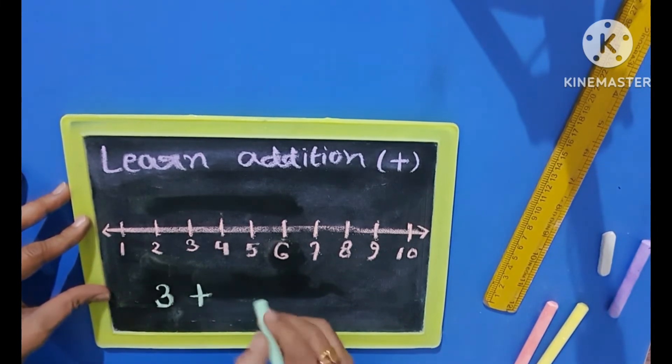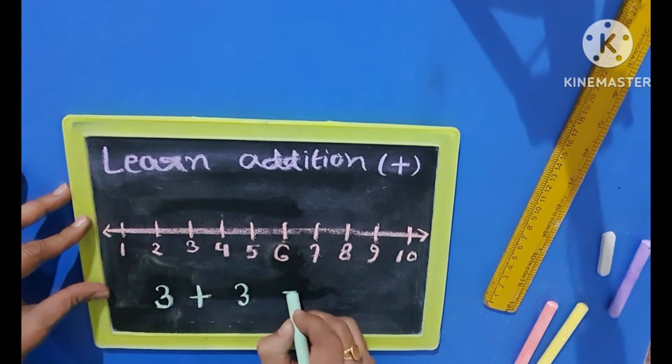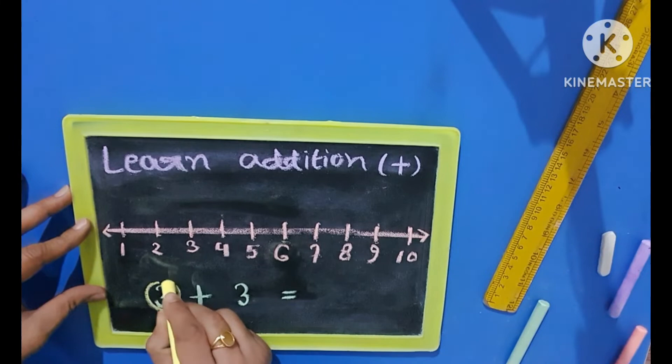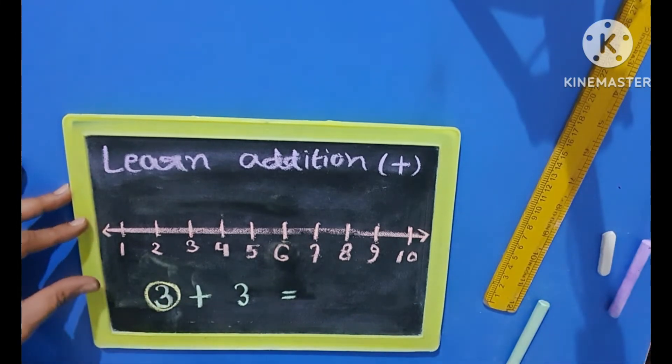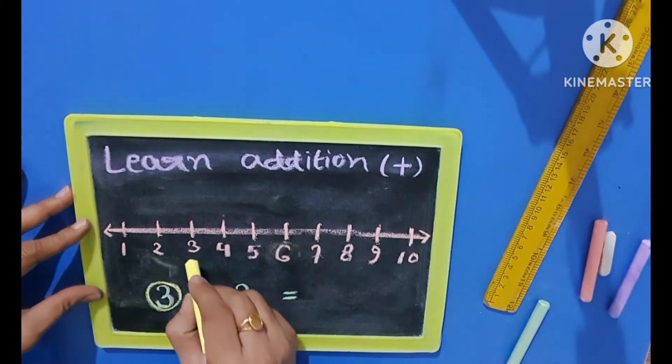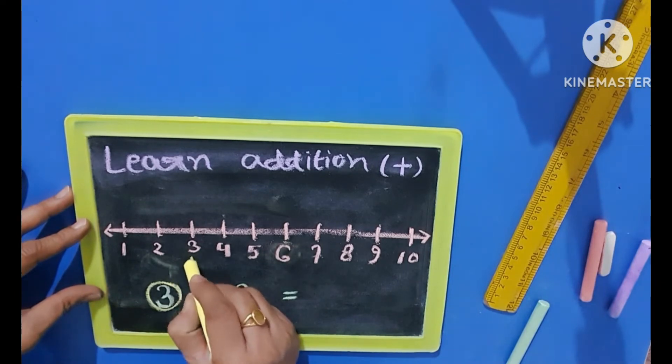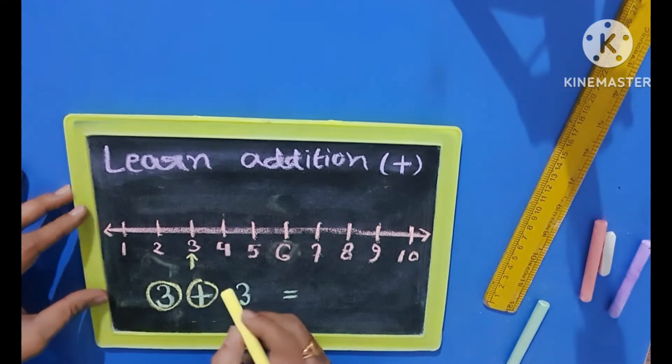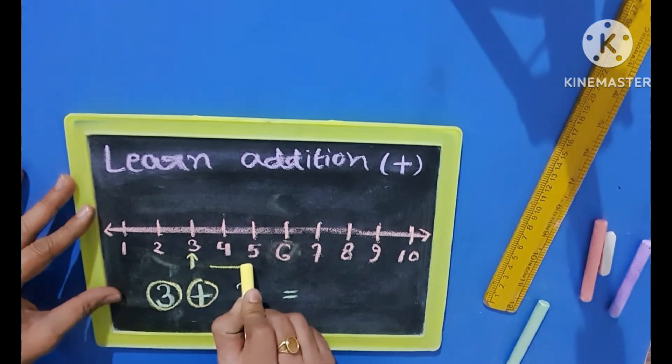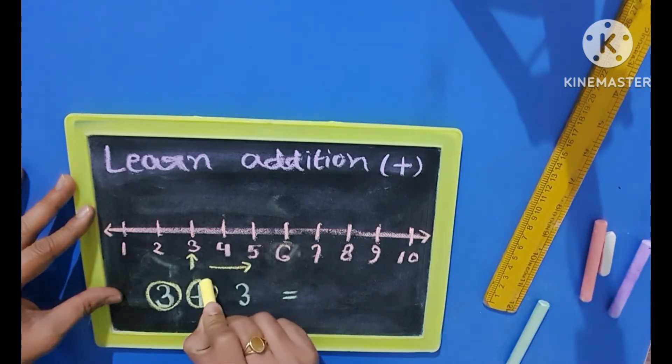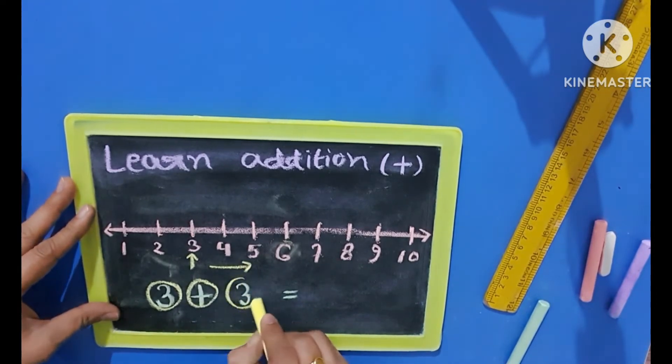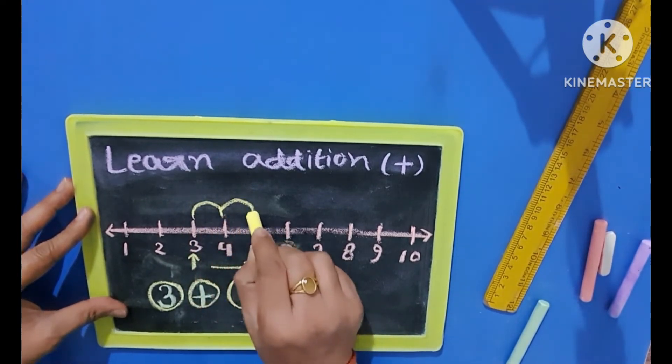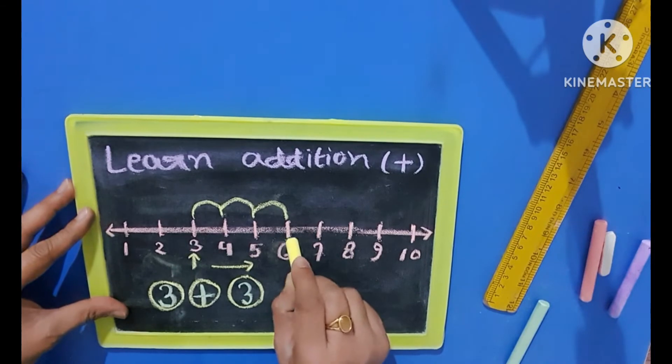Now we will add 3 plus 3. So first we have to identify number 3 in this straight line. Here is the 3, and we need to do the addition so we will find the second number in this direction.